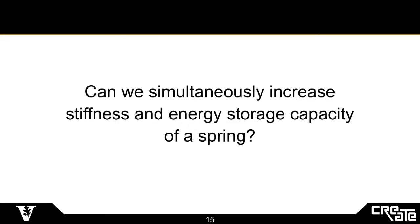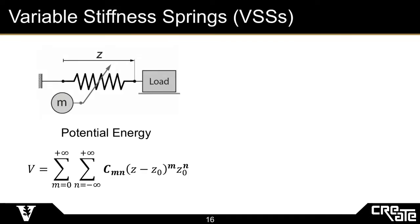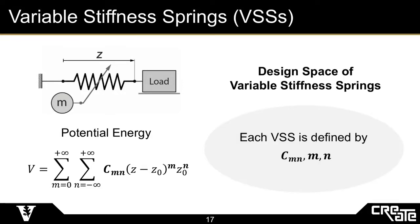Can we simultaneously increase stiffness and energy storage capacity of a spring? We can take the same general model as previous, shown on the left, and we can also define a potential energy function of this general model as a Laurent series expansion, shown below the model. This potential energy function represents a large class of variable stiffness springs, and we wish to find a smaller subclass that exhibits our desired behavior of simultaneous increase in stiffness and energy storage capacity. Particular springs within this large class are defined through the unknowns C, M, and N.